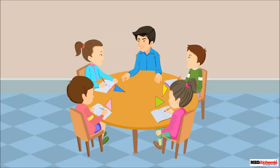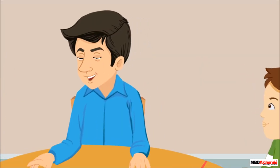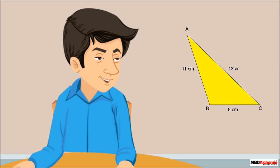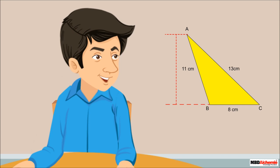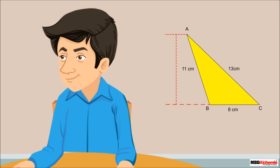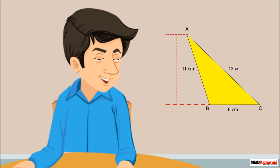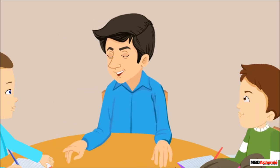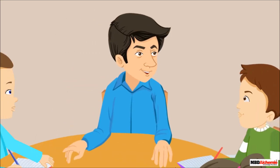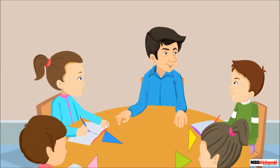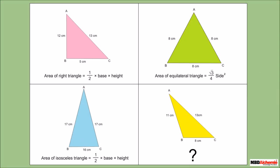They ask Neil's father, who says they can find the area of the triangle if they know its height. To do so, you need to construct a perpendicular on the base from the opposite vertex, but this is time-consuming. He suggests using a formula instead, and asks if they think they are the only ones who faced this problem, then takes them back to history.